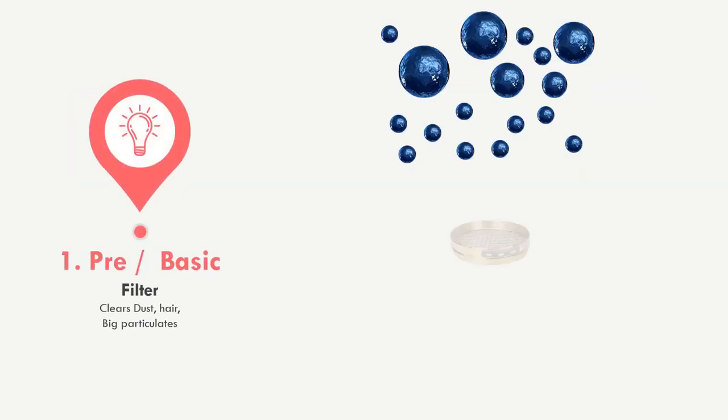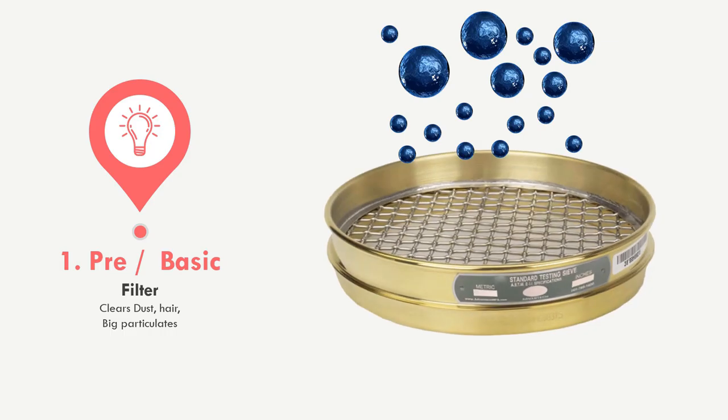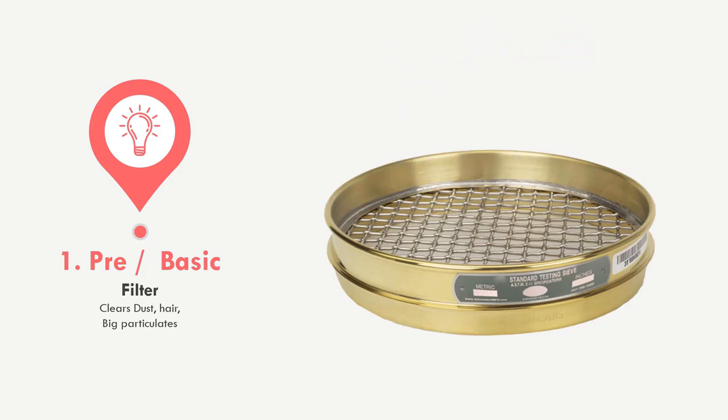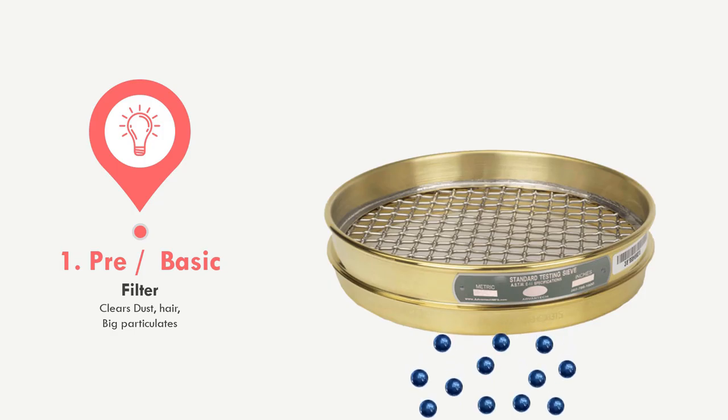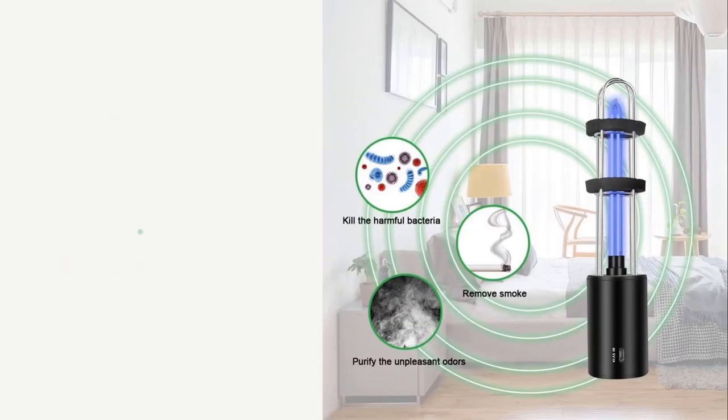The very first filter is the Pre-Filter. This is a basic filter which acts in the same way as a sieve — smaller particles pass through while large particles get trapped. In the dental aerosol context, this filter traps large dust particles, blood, hair, large abrasive particles, and more.